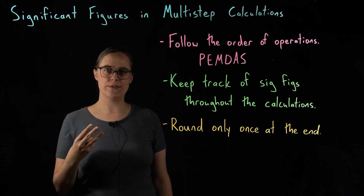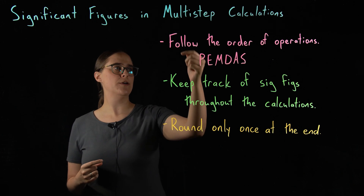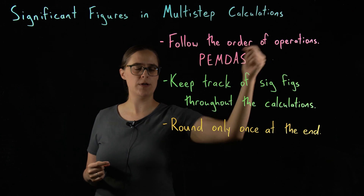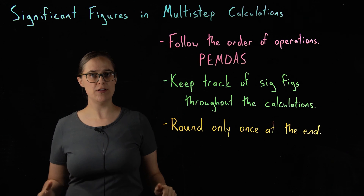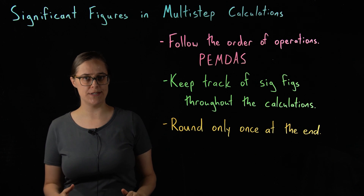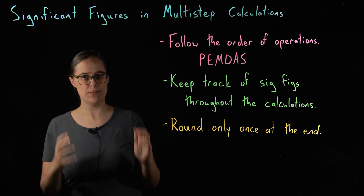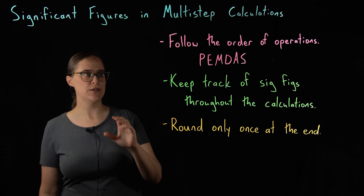There are three rules that you need to follow. First rule: follow the order of operations. This is true for all of math and has nothing to do with significant figures, but I am just reminding you that it is important.